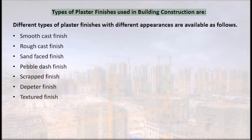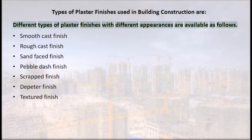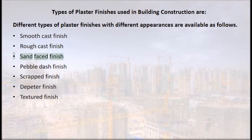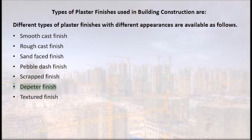Types of plaster finishes used in building construction: different types with different appearances include smooth cast finish, rough cast finish, sand faced finish, pebble dash finish, scraped finish, depeter finish, and textured finish.